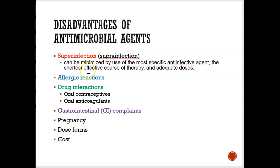The way to avoid a superinfection is to be prescribed the most specific, or narrowest, antibiotic. There's a difference between a broad antibiotic and a narrow antibiotic. A narrow, specific antibiotic means we found an antibiotic specific to the bacteria — it's meant to kill that bacteria. A broad-spectrum antibiotic can kill many types of bacteria but may not necessarily be specific to the bacteria you have. We like to use the narrowest, most specific type of antibiotic.